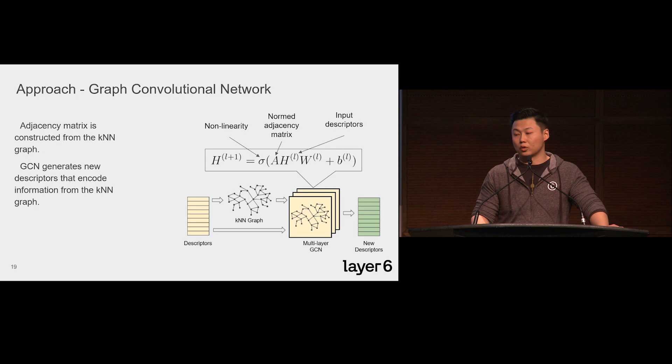Note that, unlike most of the previous applications of GCN, where the graph is given, here we construct the graph from the CNN descriptors in an unsupervised fashion.